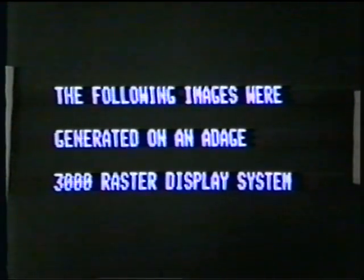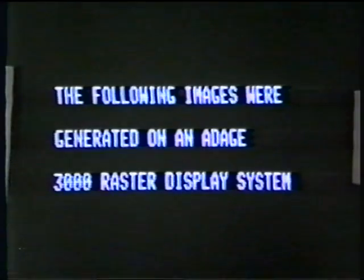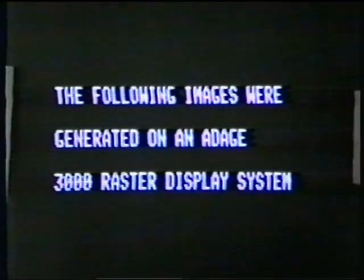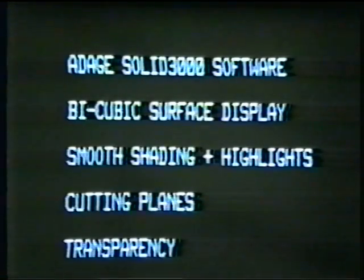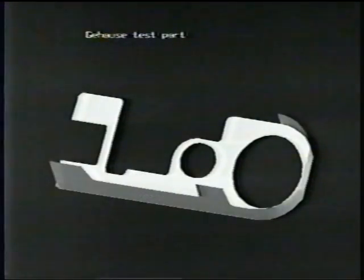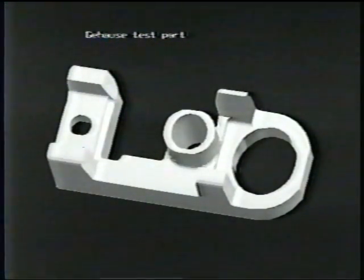This is a demonstration reel showing some applications of the ADIUS 3000 raster display system to CAD-CAM display. Our Solid 3000 software package allows the display of bicubic surfaces as well as politely defined data, and provides hidden surface removal, light shading calculations, and display as you see here. This is a politely defined CAD-CAM test object.